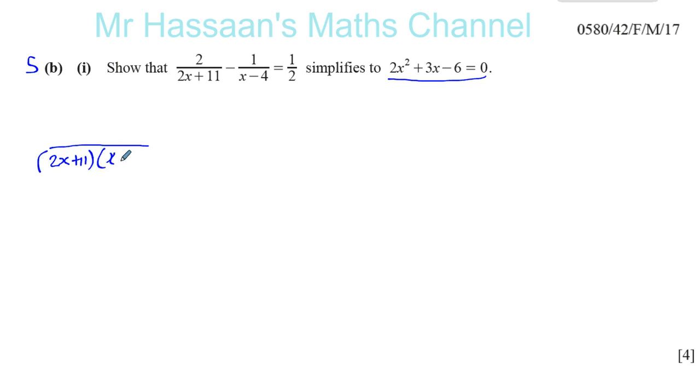...and minus, and this will have the same denominator, 2x plus 11 times x minus 4. And the other side, no problem, we can keep it as a half.